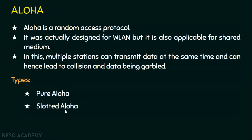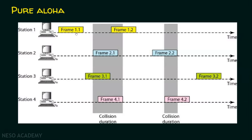There are two types of aloha: pure aloha and slotted aloha, and the topic of the day is slotted aloha. Before going into slotted aloha, let's revisit pure aloha. In pure aloha, any station can place their frames on the shared medium at any time. Station 1, 2, 3, and 4 are placing frames randomly. The collision duration is also not uniform — here we have a big collision duration and here a small one. The vulnerable time is two times the frame transmission time.